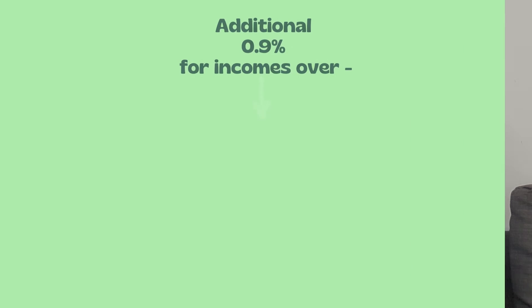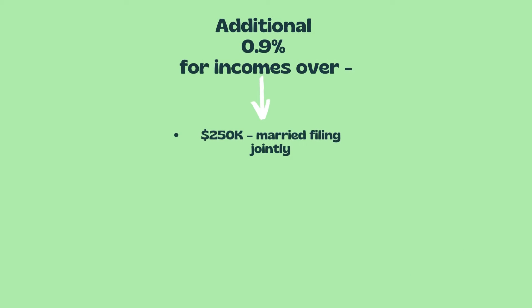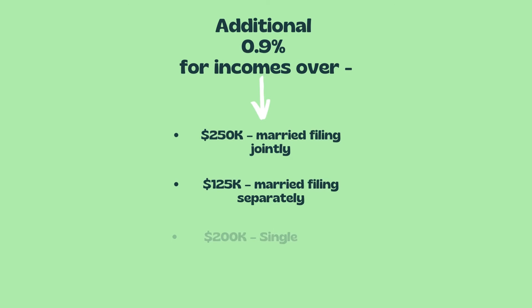The current rate for Social Security is 6.2% for both employer and employee. For Medicare, it's 1.45% for employer and employee. There is an additional 0.9% tax for incomes over $250K if you are married and filing jointly, $125K if you are married and filing separately, and $200K if you're single.